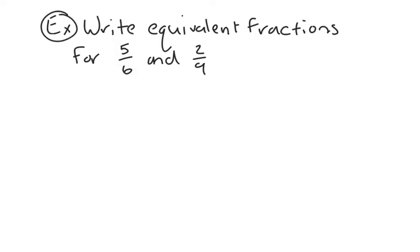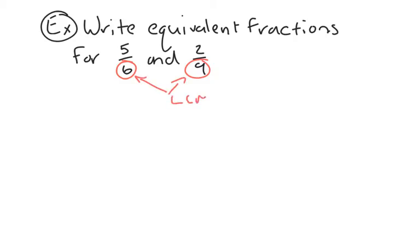In our next question, we want to write equivalent fractions for 5 over 6 and 2 over 9. This question is a little bit more challenging than our previous one. The first thing you want to do is look at the denominators for our two fractions: 6 and 9. We want to find the lowest common multiple — the LCM — of 6 and 9. We're going to write down 6 and 9 and start finding their multiples.